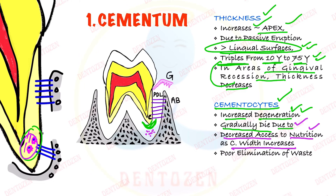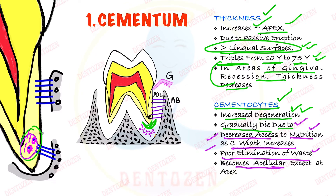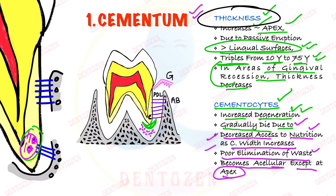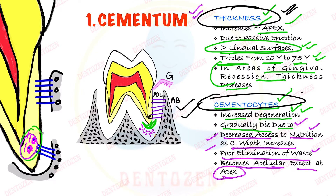Also, their waste products are now poorly eliminated because they are very far from the blood supply. So because of these reasons, they gradually die. The cellular cementum becomes acellular, except at the apical region. So the two important changes in cementum are: first, increase in thickness; and second, increased degeneration of cementocytes — their number decreases.